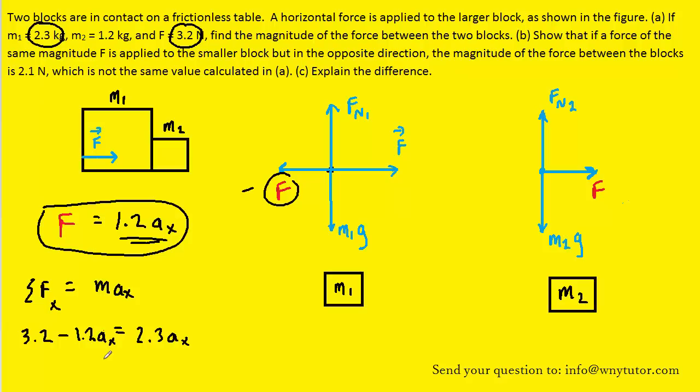Now it's rather easy to solve for Ax, so go ahead and take the time to do that. You should get 0.914 meters per second squared, and then all we need to do is take that acceleration and plug it back into the equation right here to solve for the force that's acting between the two objects.